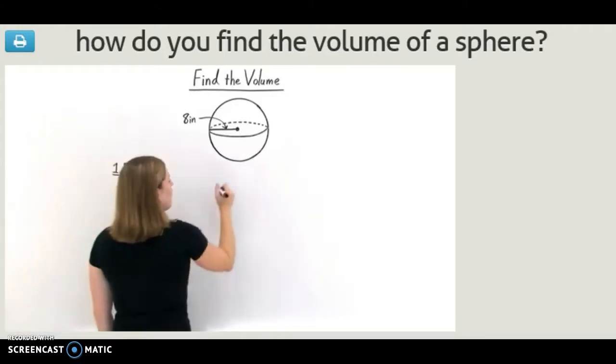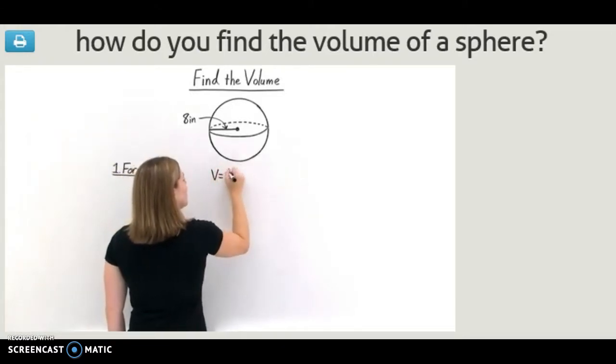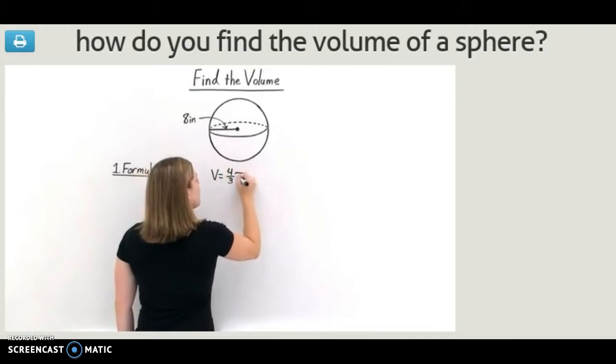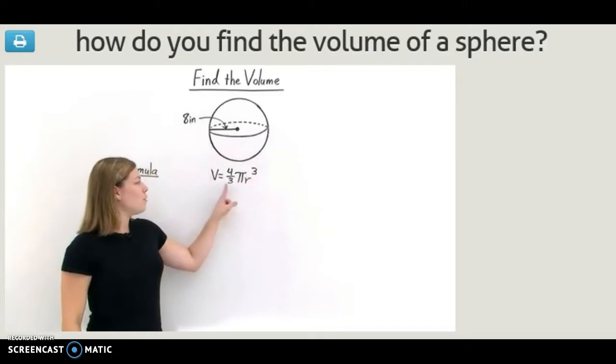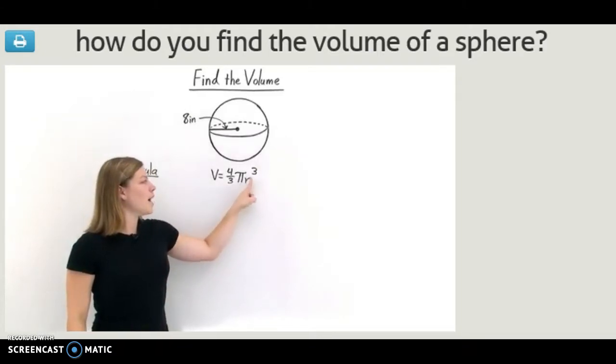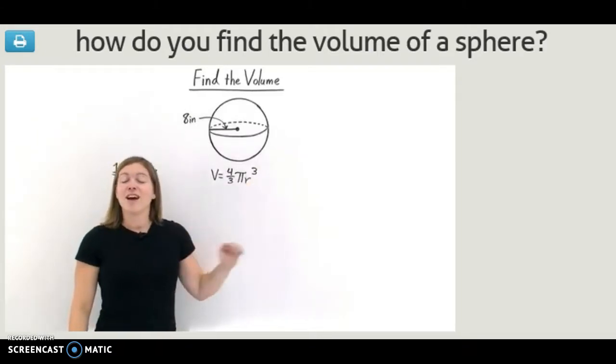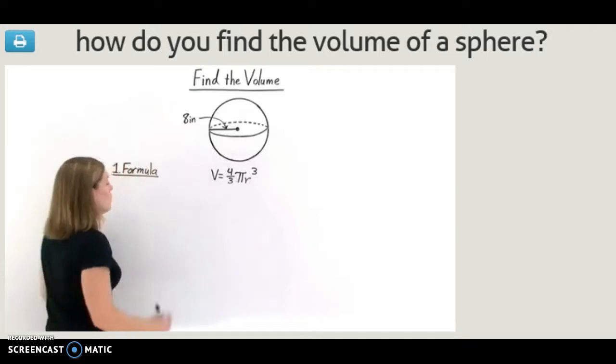So let's look at this formula. The volume of a sphere is equal to 4 thirds times pi r cubed. So here, the volume of a sphere is equal to 4 thirds times pi times the radius cubed. Now, we can use this formula to find the volume.